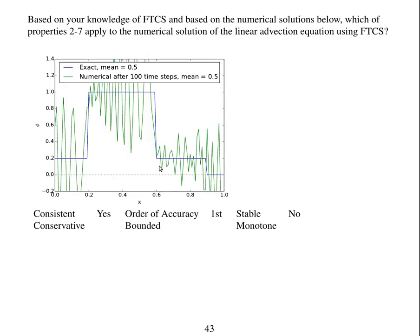Is it stable? Well, we haven't got mathematical evidence, but based on the evidence of this solution, it looks as if it is not stable. Conservative—is it conservative? Well, the mean didn't change at all, so I would say yes, it appears to be conservative. Is it bounded? Absolutely not. The initial values were between zero and one. It did not stay between zero and one. And it's not monotone. A lot of new oscillations are generated here.